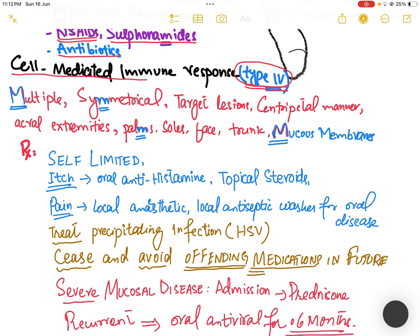On examination, there are multiple symmetrical target-shaped lesions with centripetal manner, present mostly on the acral parts of extremities, including palms, soles, and face, trunk, and mucous membranes.